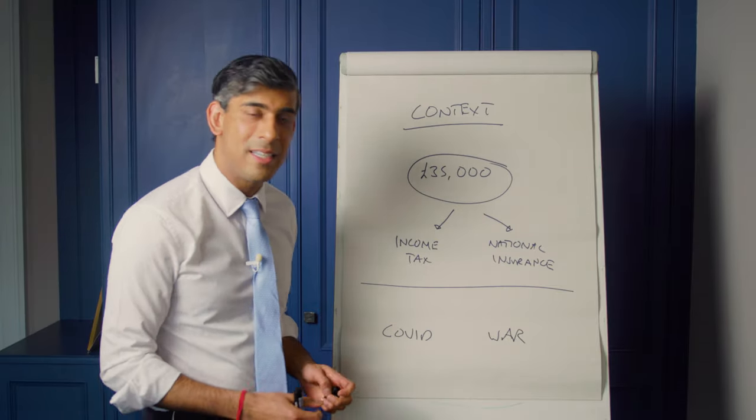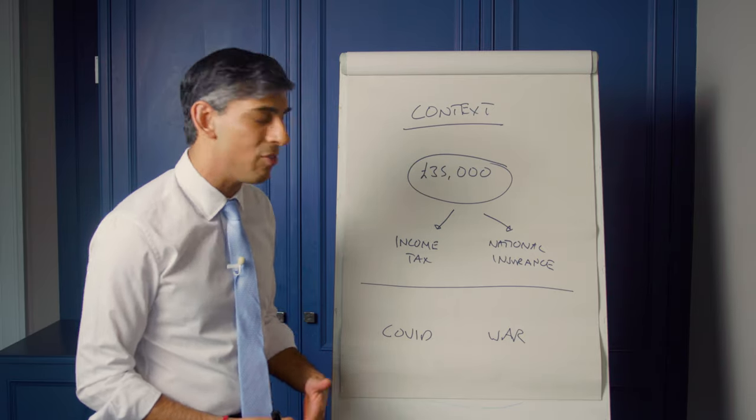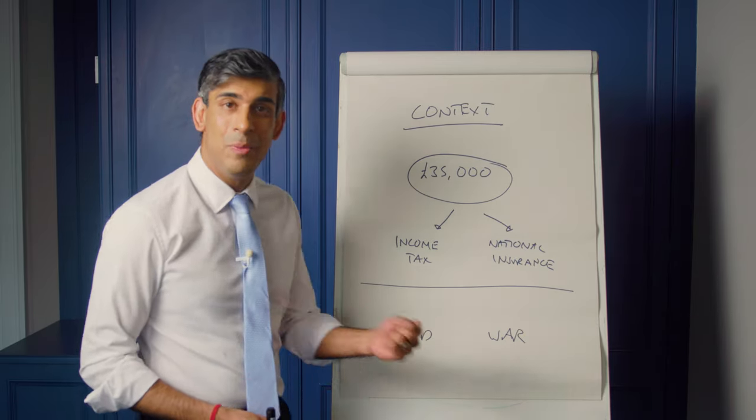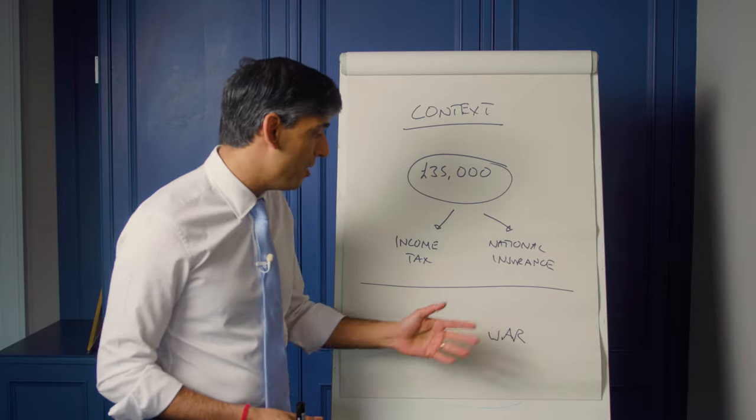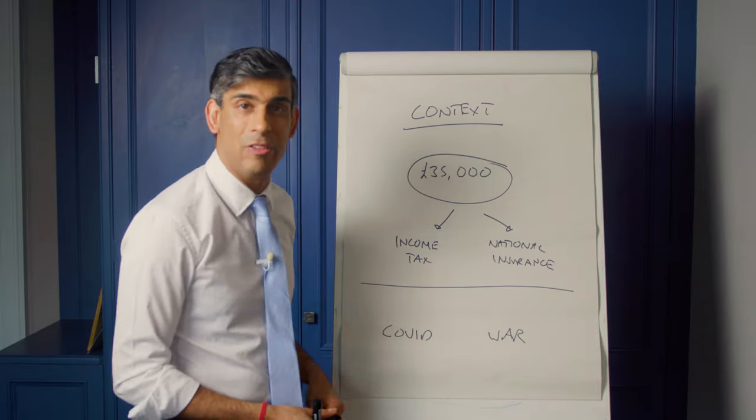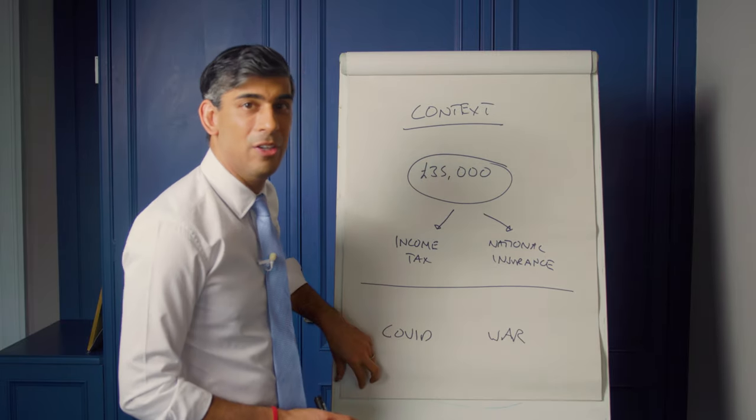Covid meant that the government had to step in and support the country with hundreds of billions of pounds: the NHS, the furlough scheme, the vaccine rollout. And the war in Ukraine meant we stepped in again to help people with their energy bills and alleviate some of the impact of high inflation on things like food prices. But at the start of this year, the economy has turned a corner.